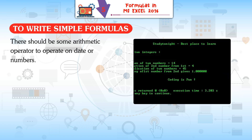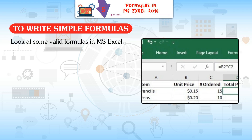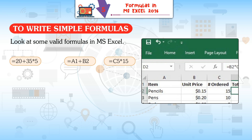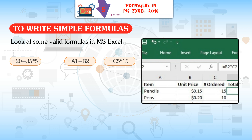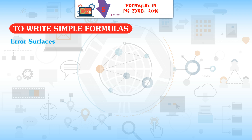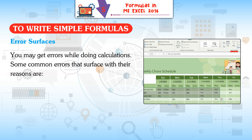To write simple formulas, let's learn using the arithmetic operators we just studied. There should be some arithmetic operator to operate on data or numbers. The data may be a cell address also. Valid formulas in MS Excel include: =20+35*5, =A1+B2, =C5*15. Always remember: each formula should start with an equal to sign, and ensure there is no space before the equal to sign.